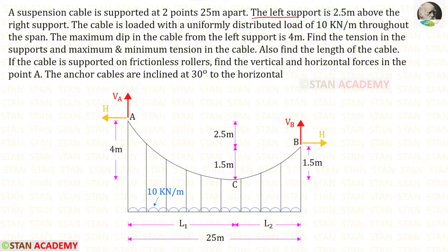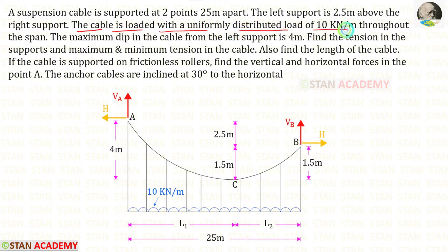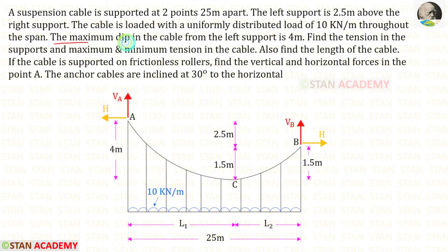The left support A is 2.5 meters above the right support B. The cable is loaded with a uniformly distributed load of 10 kN per meter throughout the span.